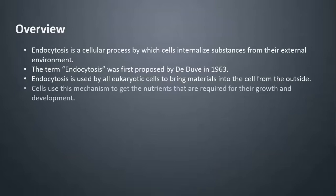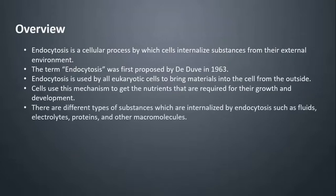Cells use this mechanism to get the nutrients that are required for their growth and development. There are different types of substances which are internalized by endocytosis, such as fluids, electrolytes, proteins, and other macromolecules.